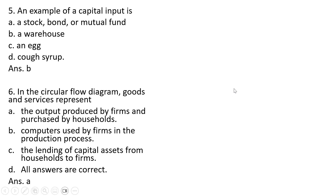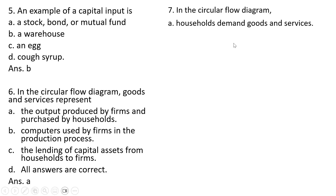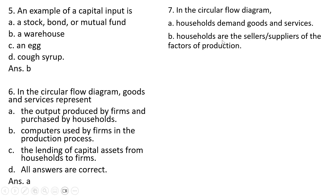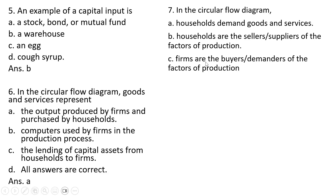Question 7: In the circular flow diagram — households demand goods and services, that is true. Households are the sellers or suppliers of the factors of production, that is true. Firms are the buyers or demanders of the factors of production, that is also true. So all answer choices are correct. Answer D.